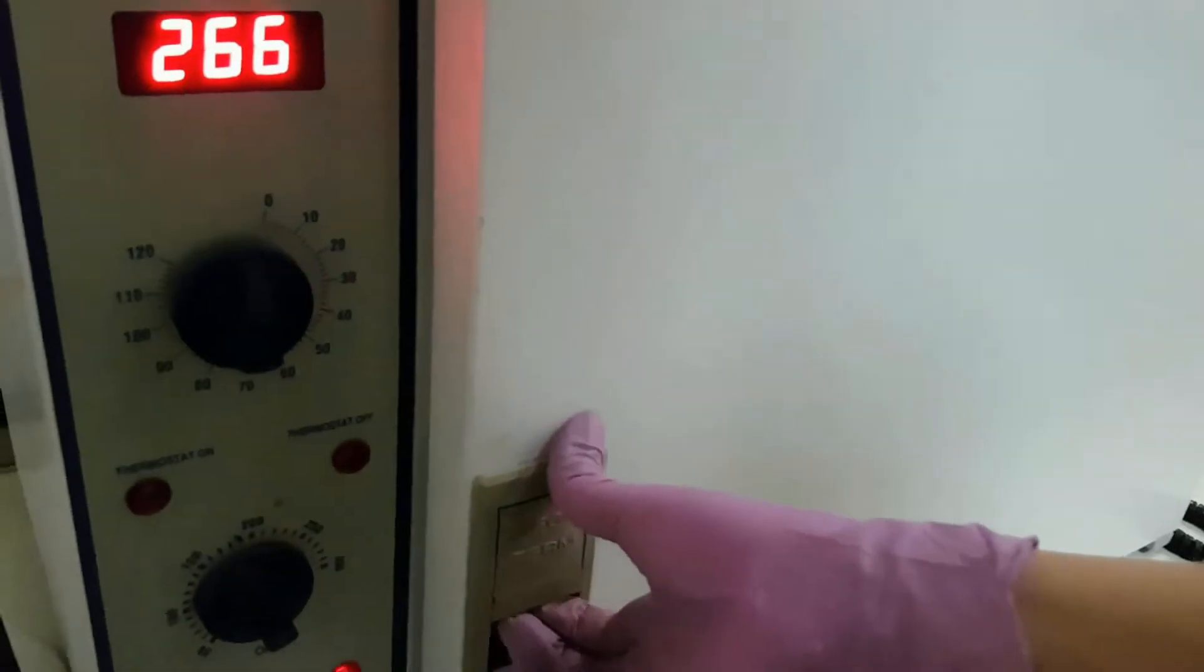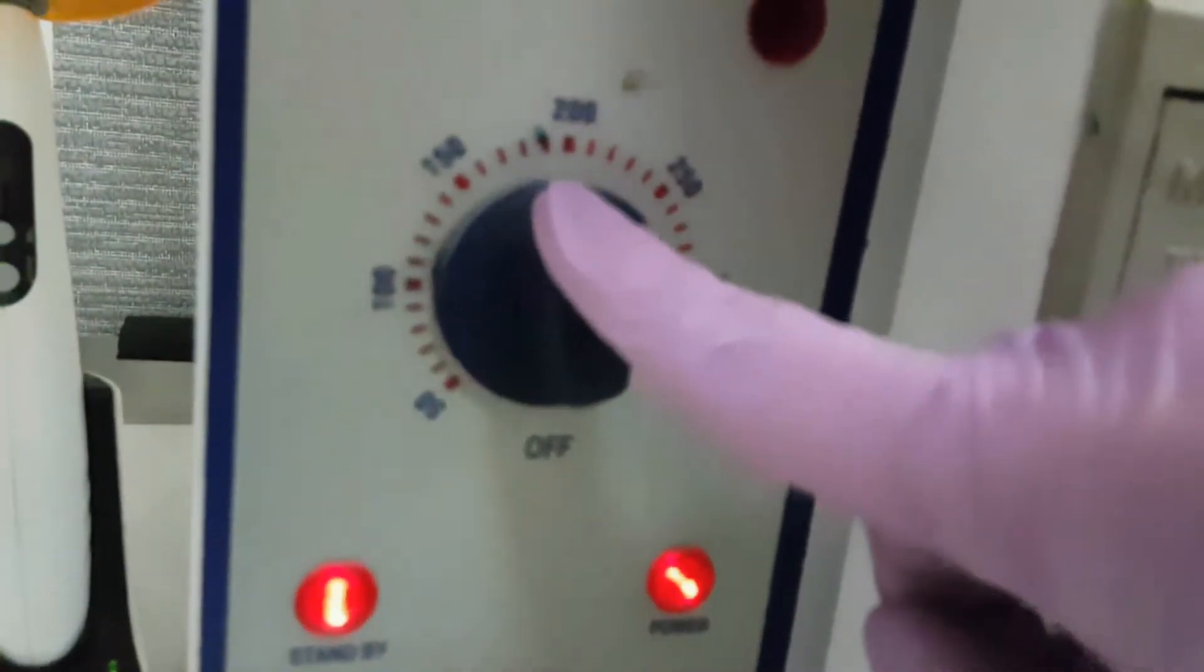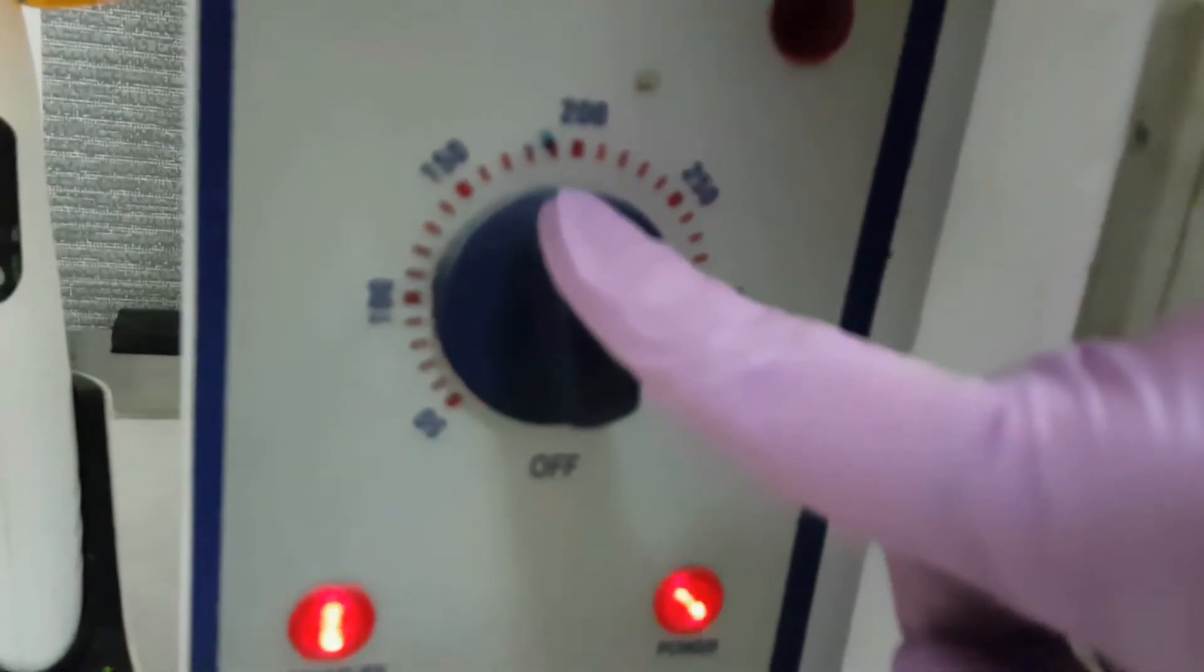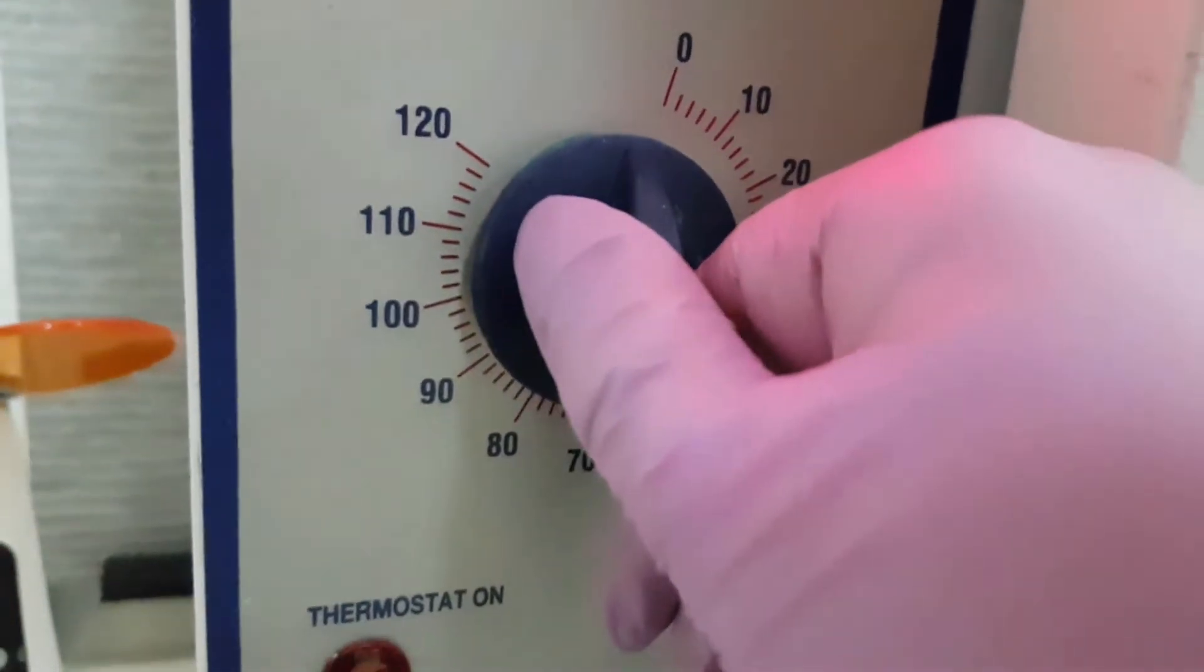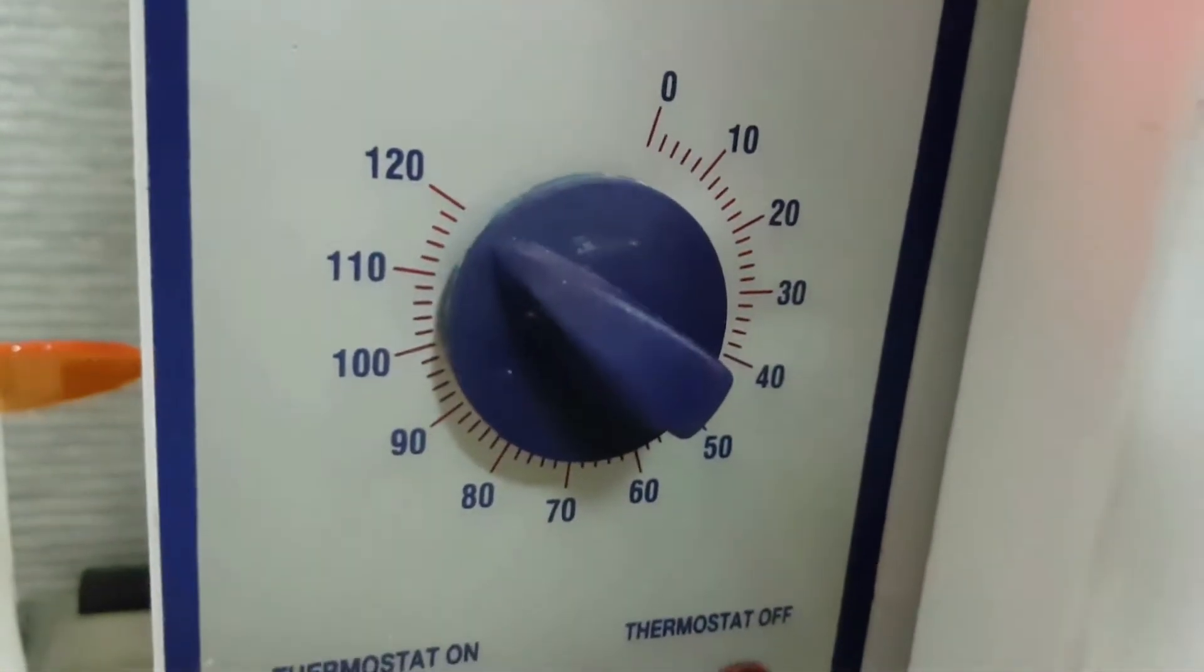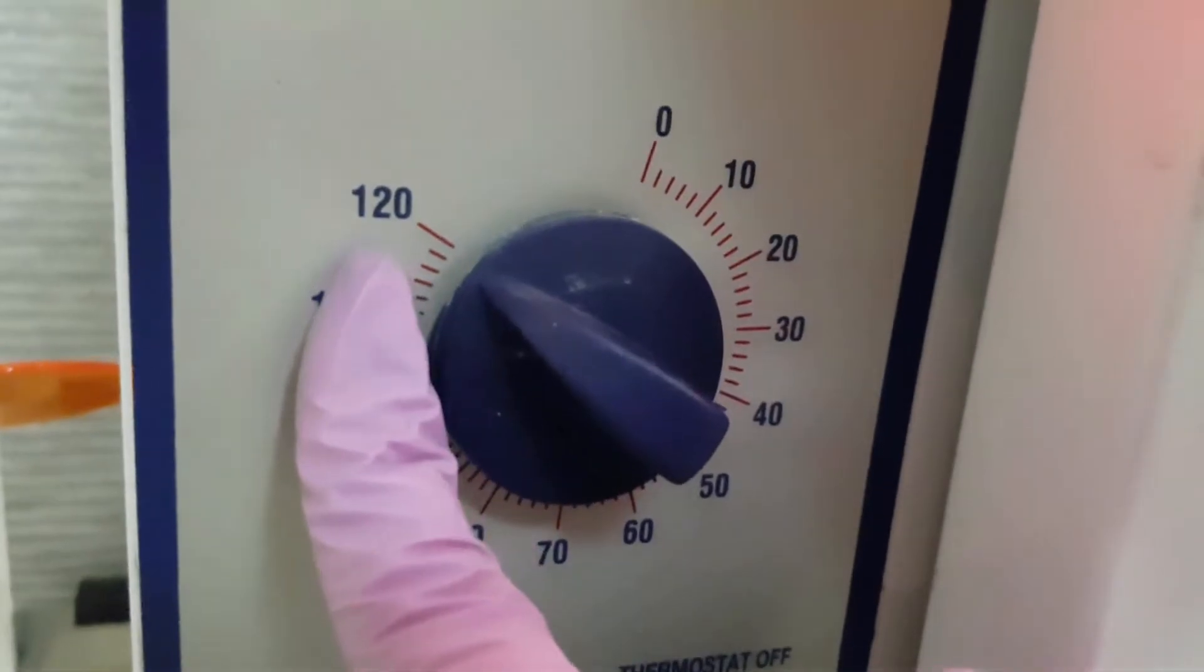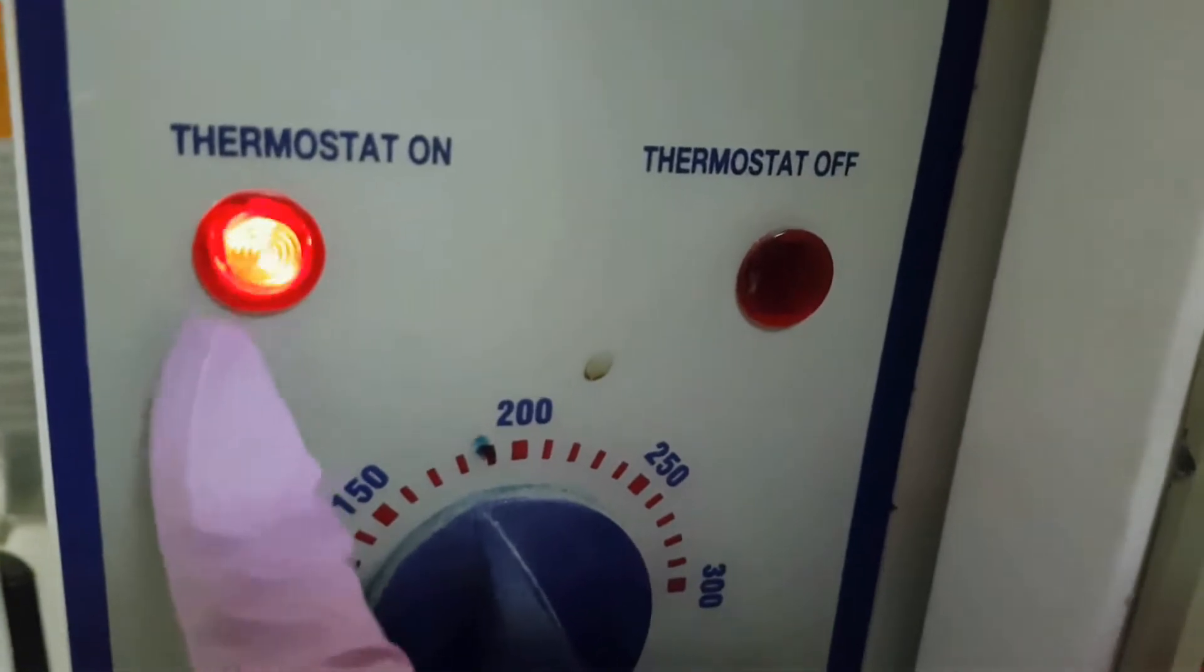So we close it up. We select our temperature 180 degrees Celsius and we put the timer on 120 minutes or 2 hours. This way we have maximum sterilization, and the light shows us that the machine is working.